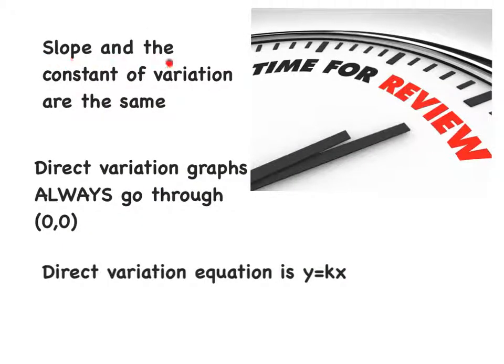To recap: slope and the constant of variation are the same. Direct variation graphs always go through (0, 0). The direct variation equation is y equals kx.